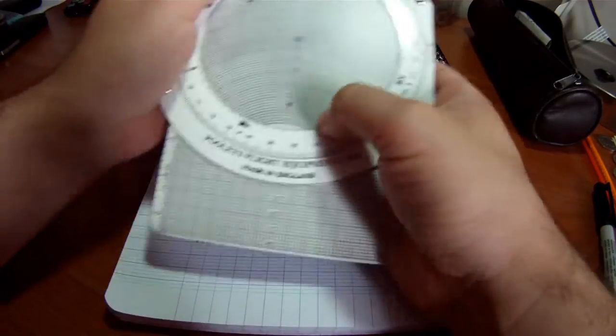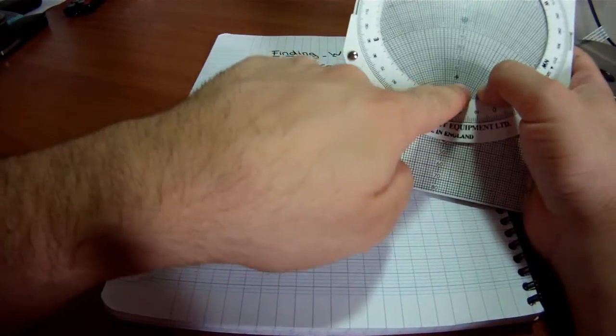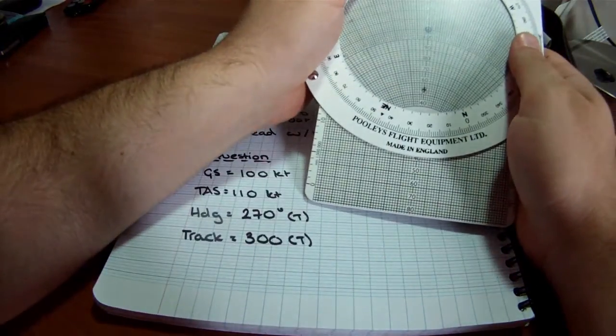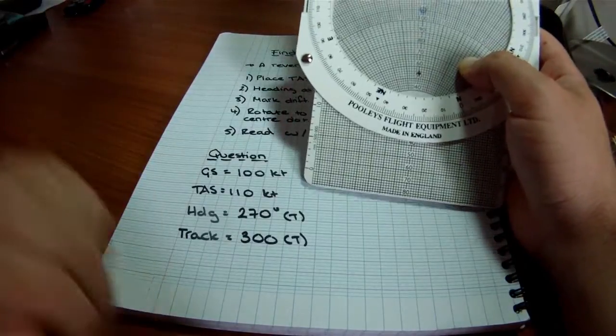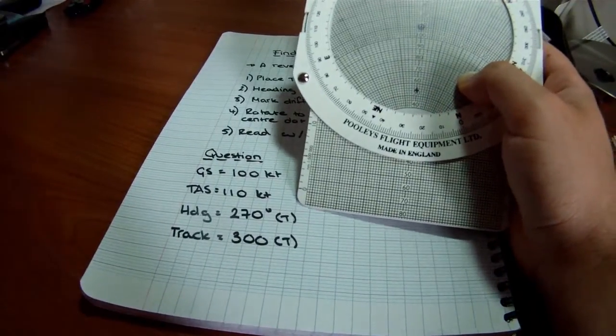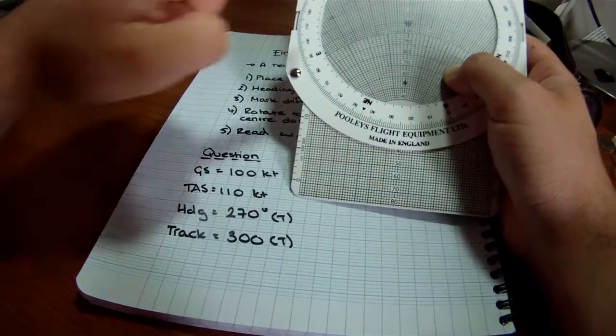So we're going to rotate it clockwise. There you go. And you're going to get this center dot, this dot at the bottom, to get a smaller value than 270 so that we get a wind coming from the left. It's a nice easy way to work out which dot to use.